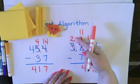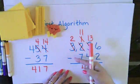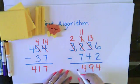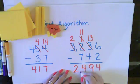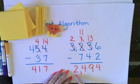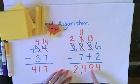And I have 2 1000s minus 0 1000s, and that leaves me 2 1000s. So my answer is 2,494.